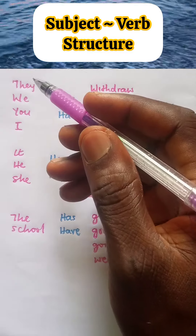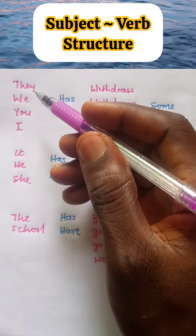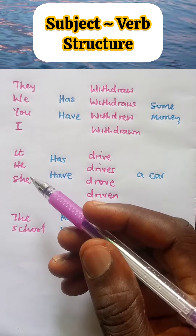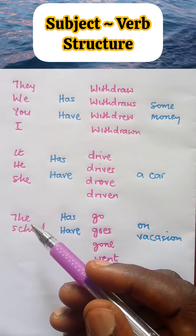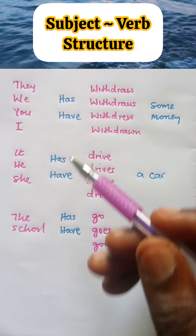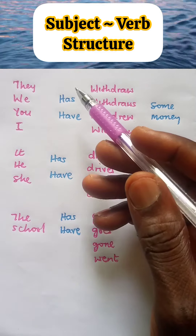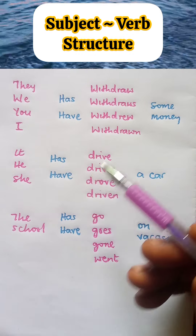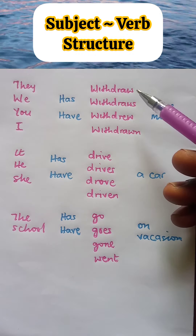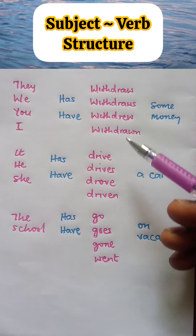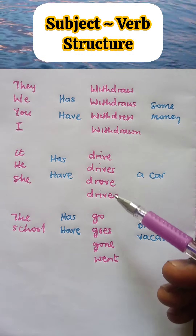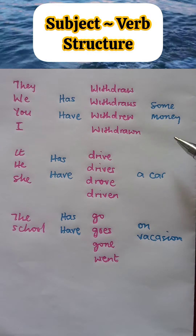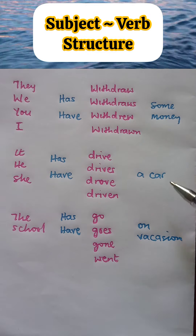Subject-verb structure. Look at this first column. We have subjective pronouns. Here is a noun phrase. The second column contains anomalous verbs. The third column contains lexical verbs. And the last column contains noun phrases.